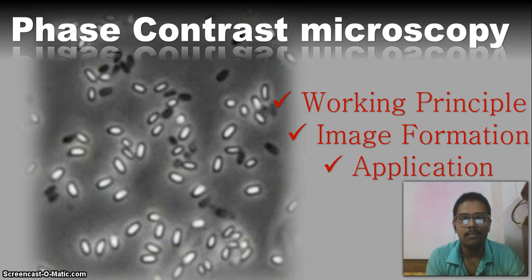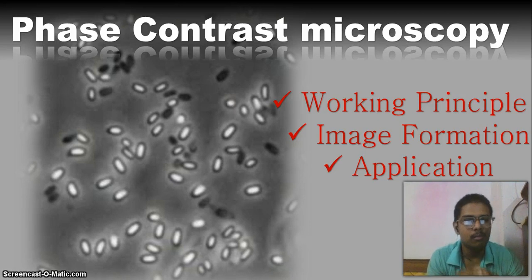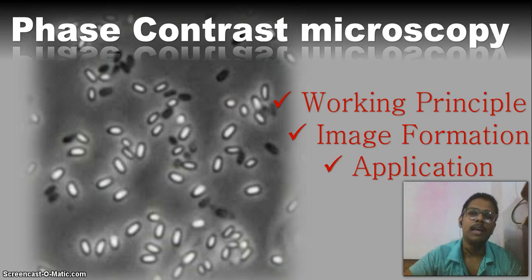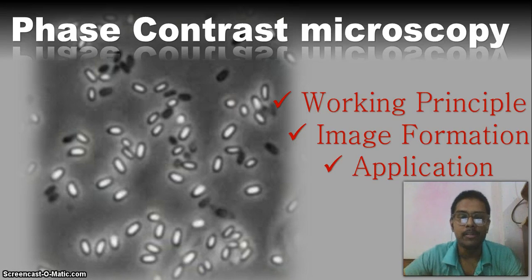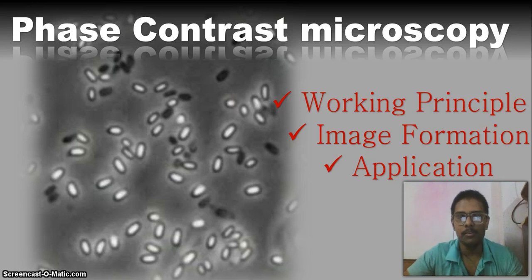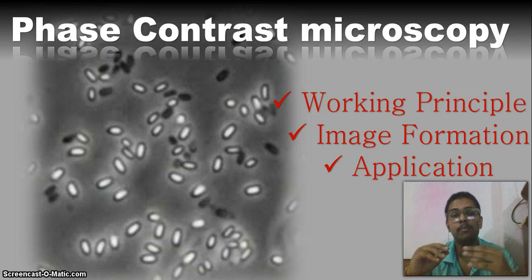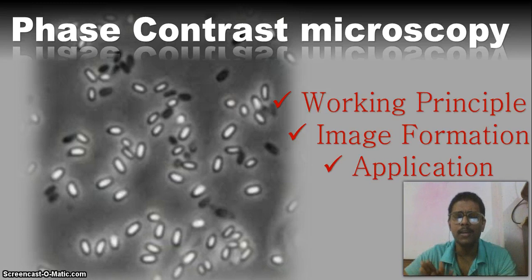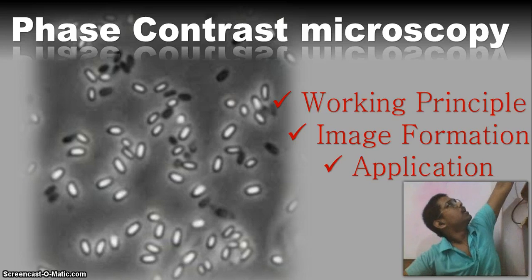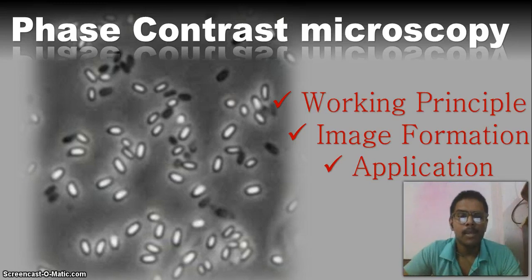In dark field microscopy, we used a special type of condenser lens which is very important to eliminate all the light beam from the central part, and then by using another objective aperture lens after the specimen, we want to get only the diffracted light from the specimen. The whole concept of dark field microscopy is that we are taking into consideration only those light rays which are actually diffracted from the specimen interactions.